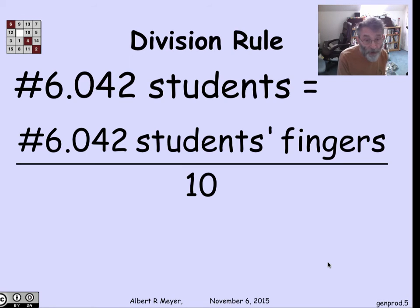A stupid but informative way would be to count the total number of fingers of 6042 students and divide by 10. That equality holds assuming no polydactylism or amputations in the class - that is, every student has exactly 10 fingers.